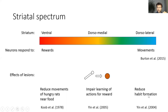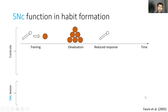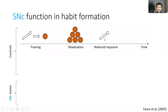Lesions to the dorsolateral striatum produce impairments in habit formation. Let me explain how habit formation is studied in animals. A rat is placed in a box with a lever, and pressing the lever results in reward. Rats learn to press the lever to get the reward. Then the animals are fed to satiety so they no longer desire the reward. When placed back in the box, the rat will not press the lever much. In this situation, the behavior is goal-directed because it only presses the lever when it desires the reward.